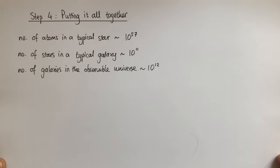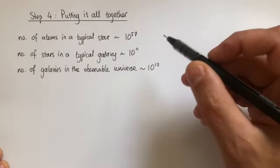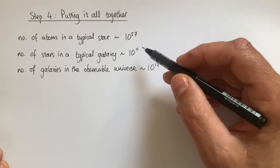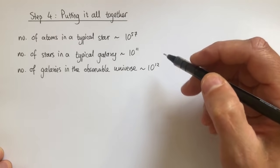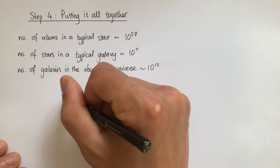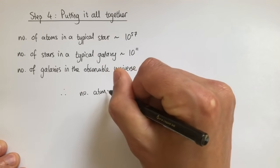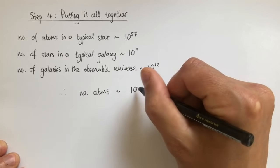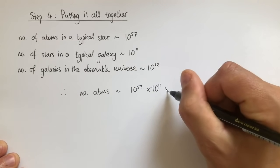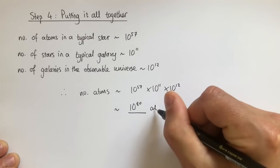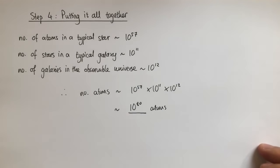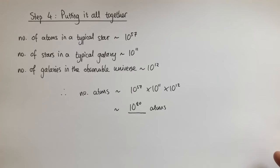We are now in a position to combine our calculations and arrive at an estimate for the number of atoms in the observable universe. The number of atoms in a typical star is around 10⁵⁷, the number of stars in a typical galaxy is around 10¹¹, and the number of galaxies in the observable universe is around 10¹². Multiplying these together: 10⁵⁷ × 10¹¹ × 10¹² gives us an estimate of 10⁸⁰ atoms in the observable universe. This ends our calculation — I hope you've enjoyed the video, thank you.